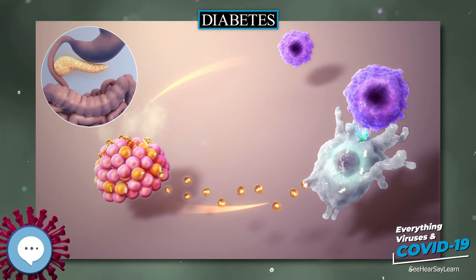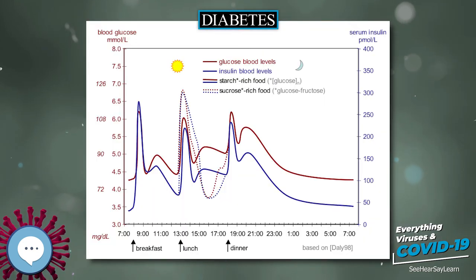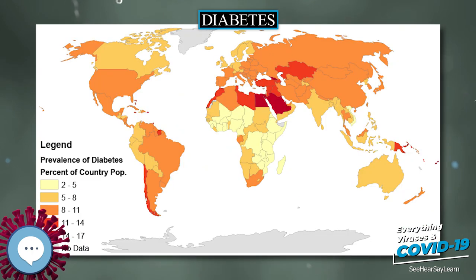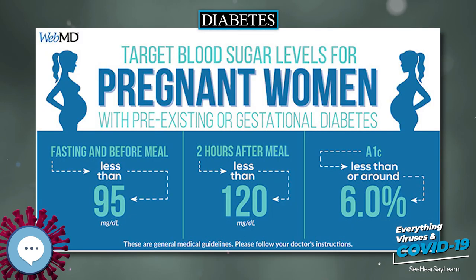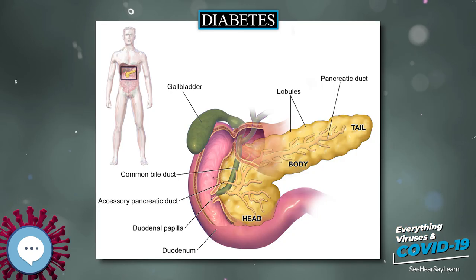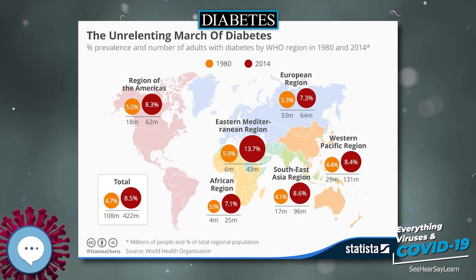The word diabetes comes from Latin diabetes, which in turn comes from ancient Greek diabētēs, which literally means a passer through, a siphon. Ancient Greek physician Aretaeus of Cappadocia used that word with the intended meaning of excessive discharge of urine as the name for the disease. Ultimately, the word comes from Greek diabainein, meaning to pass through, which is composed of dia meaning through and bainein meaning to go. The word diabetes is first recorded in English in the form diabetes in a medical text written around 1425.